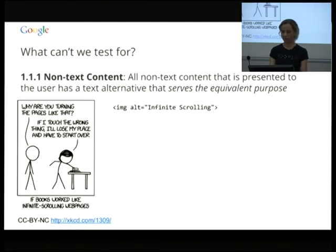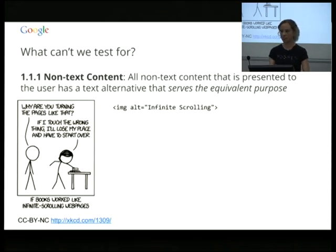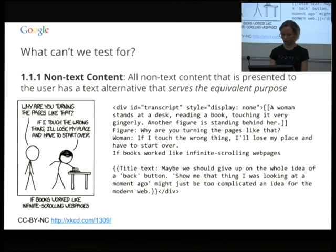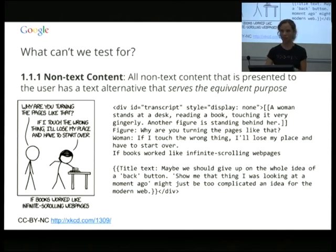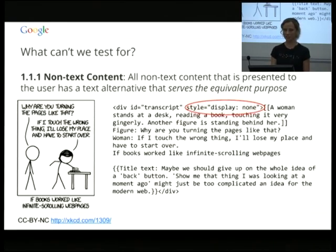Non-text content: looking at text alternatives that serve the equivalent purpose — we can detect whether there's an alt tag, but we can't detect if it's any good. This is XKCD, and the alt text says 'infinite scrolling,' which is valid alt text but really not doing the same thing as the image. Interestingly on the same page there is a div transcribing the text of the image and showing the title text, which is phenomenally useful and really should be the alt text or used in the described-at tag — however, it's actually invisible to screen readers, which is incredibly ironic.